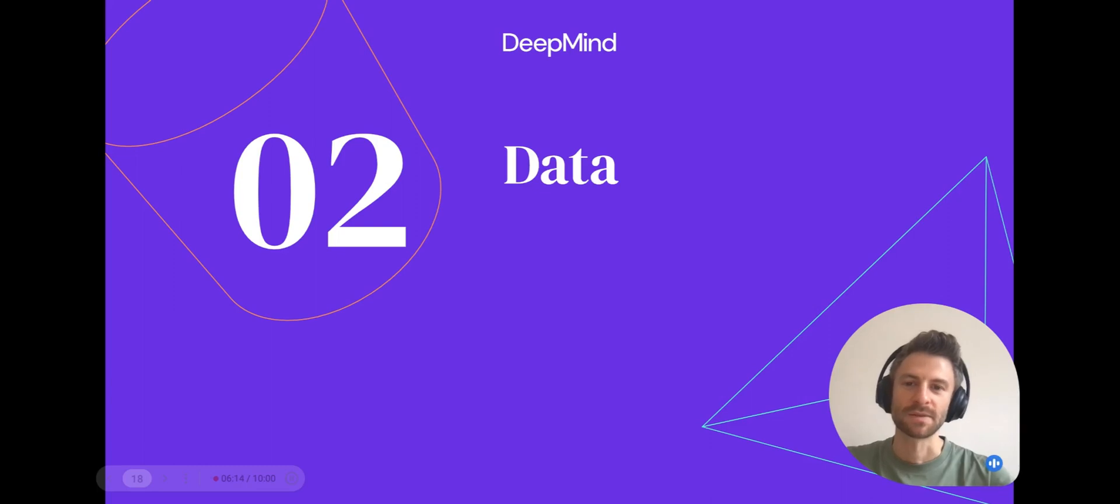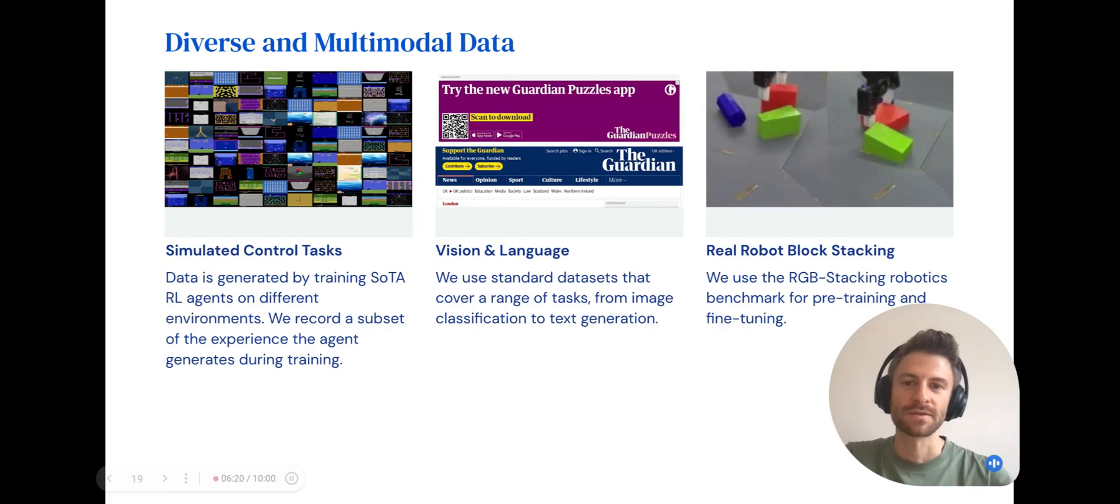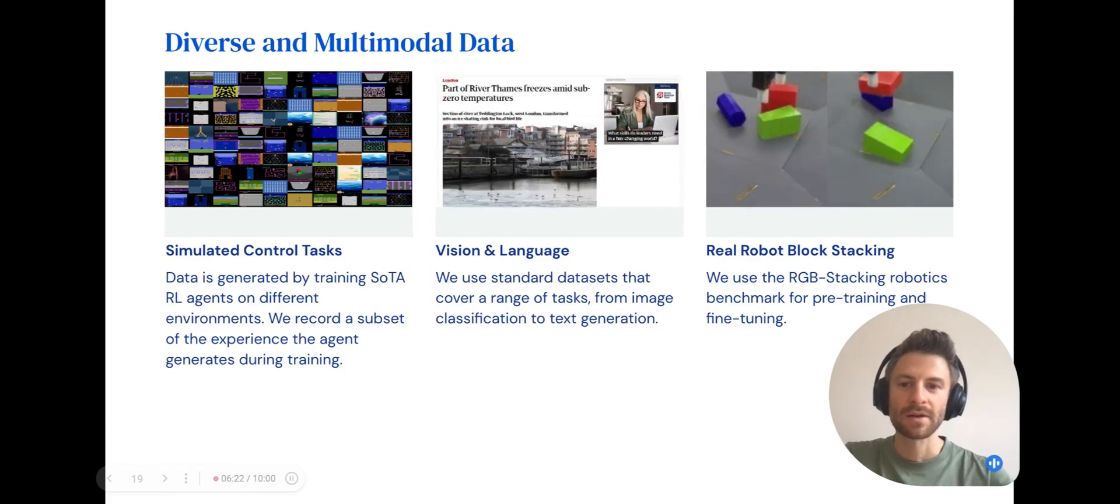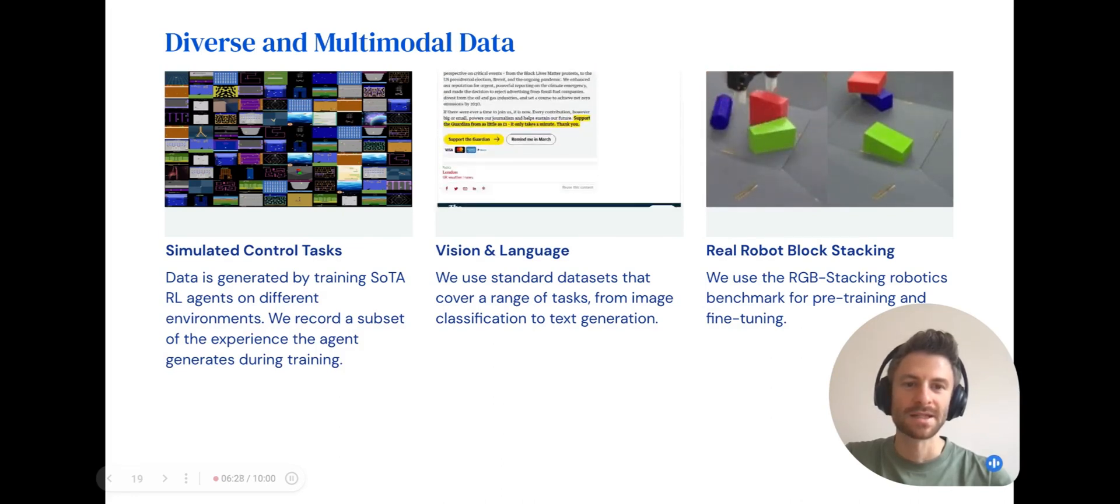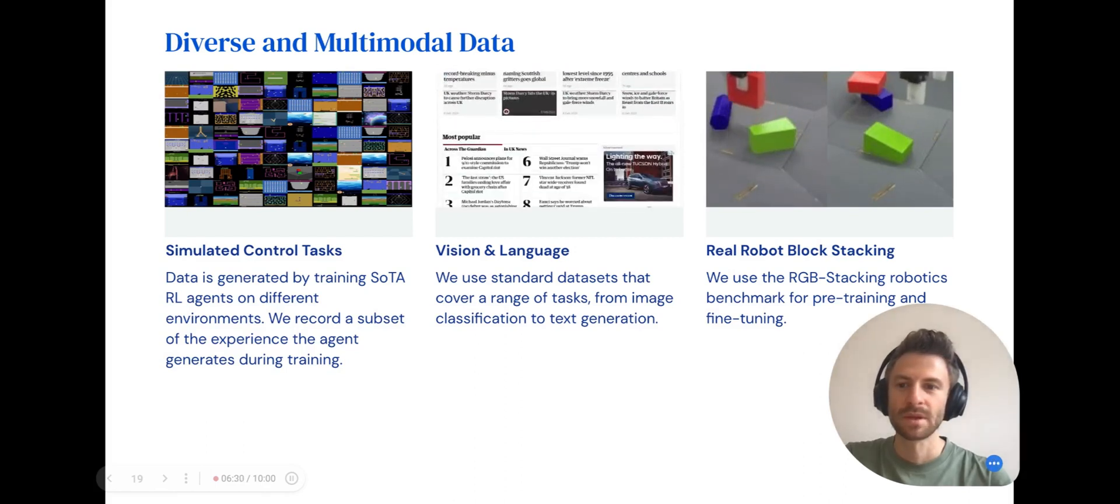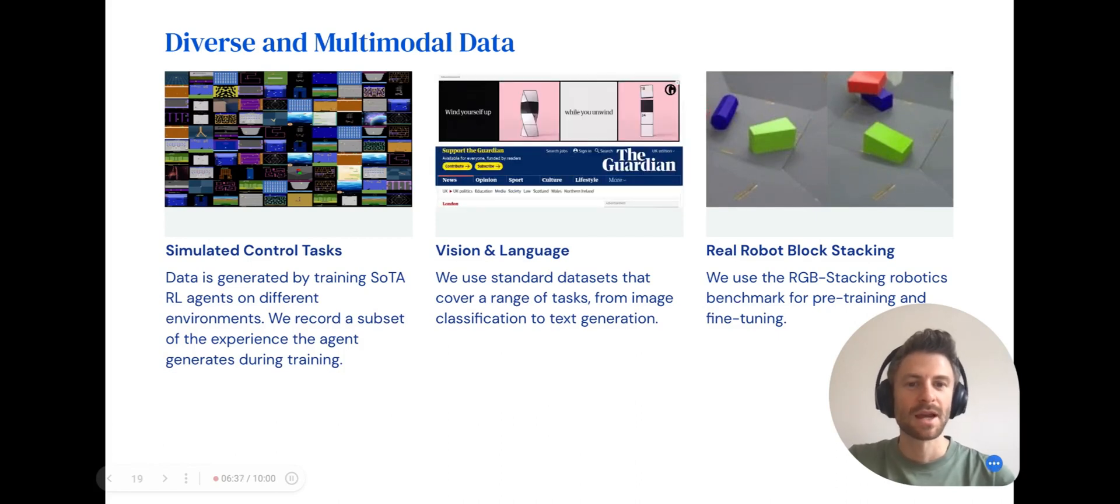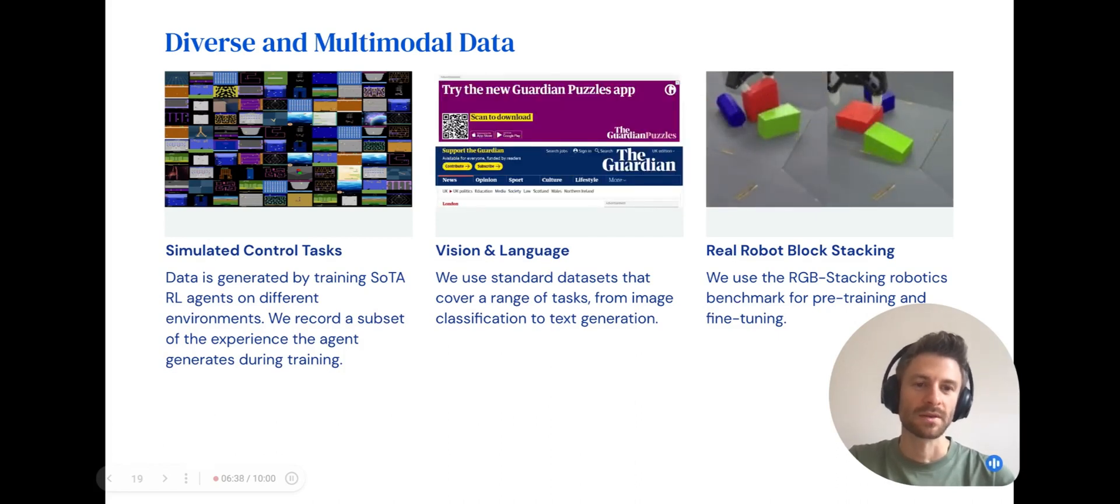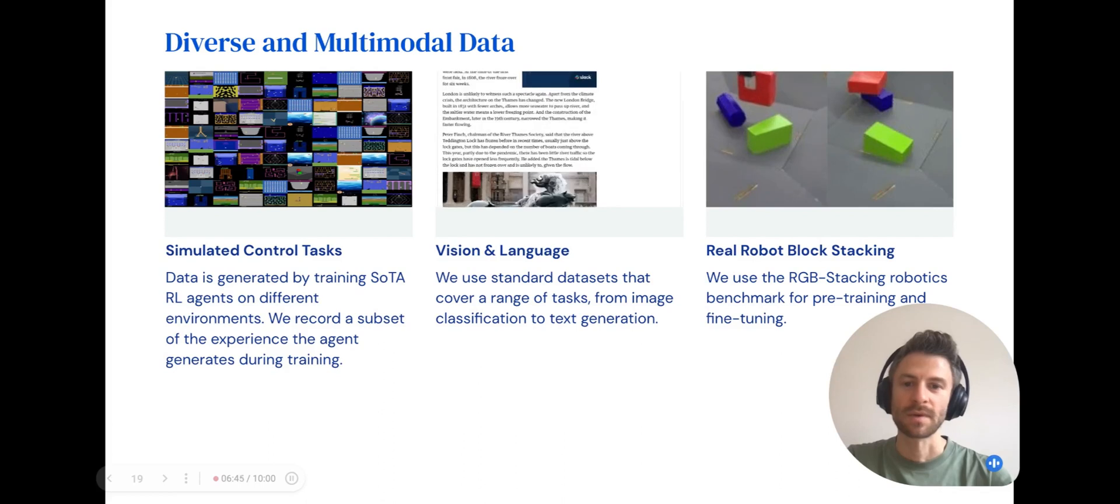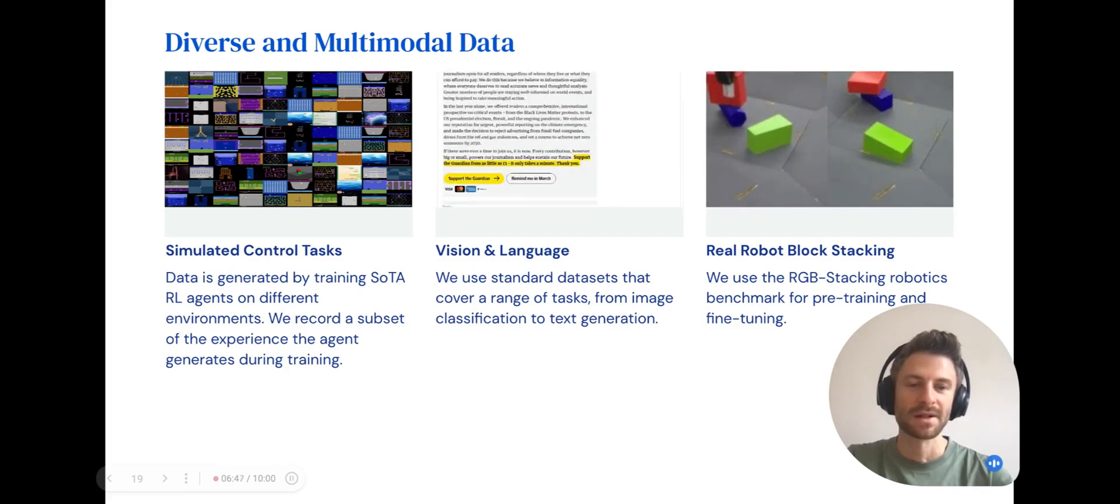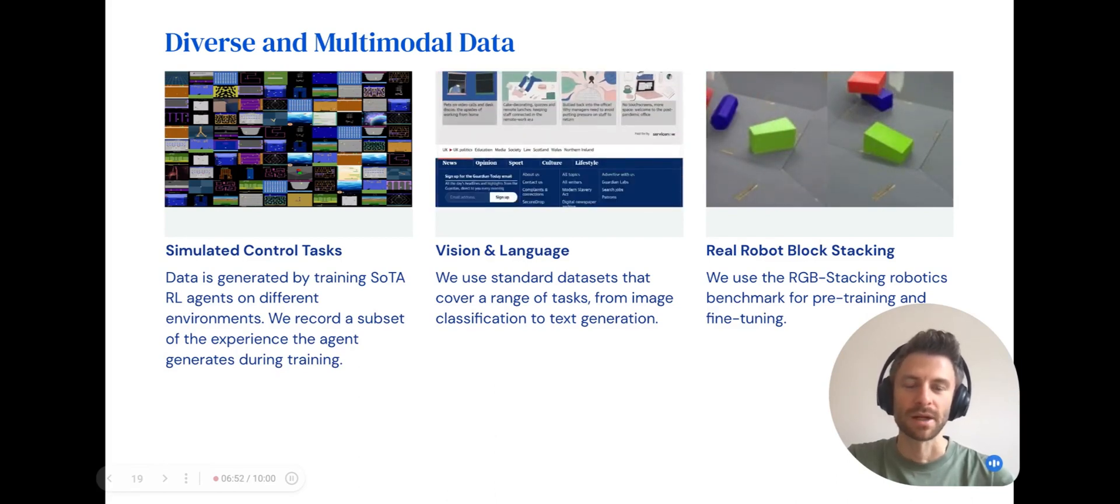Now I'll talk about the datasets we use for training and fine-tuning. Gato uses large and diverse datasets for pre-training. Here we've aggregated them into three broad categories: simulated control tasks, vision and language datasets, and real robot tasks. We collected data for the simulated control tasks by training state-of-the-art RL agents and recording the data they produce while learning the task at hand. For vision and language tasks, we use standard datasets that cover range tasks from image classification to text generation. The real robot stacking data came from the RGB stacking robotics benchmark.